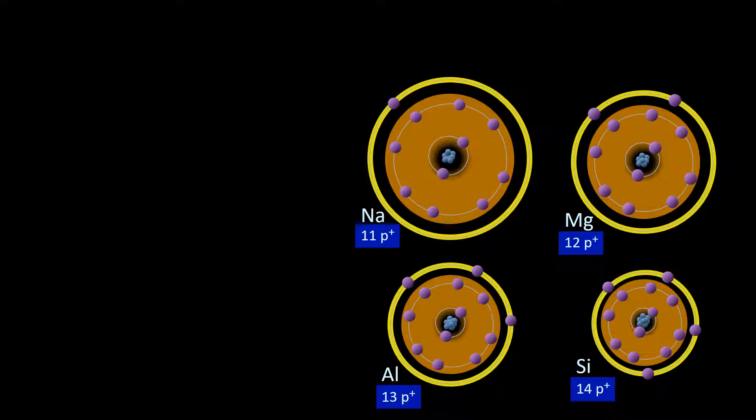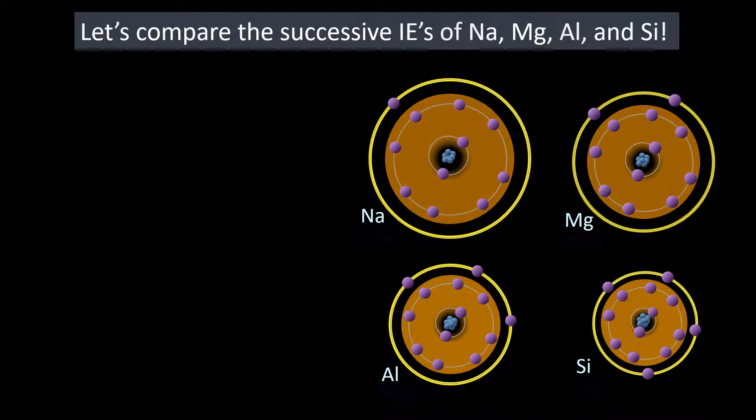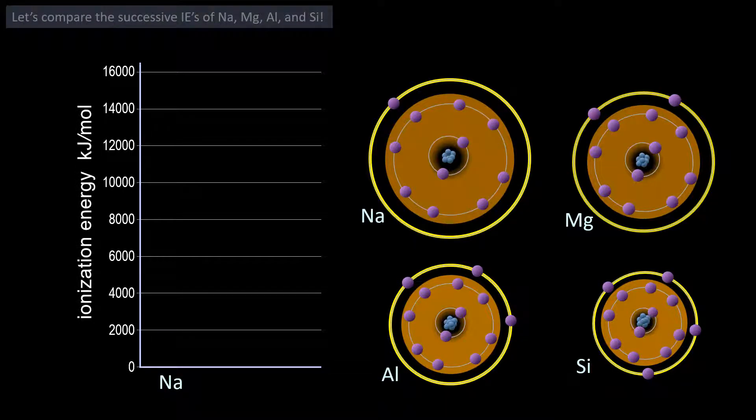Also important, notice that each succeeding element has one more proton, which increases the attraction the nucleus has for their electrons. And now we can compare their successive ionization energies.